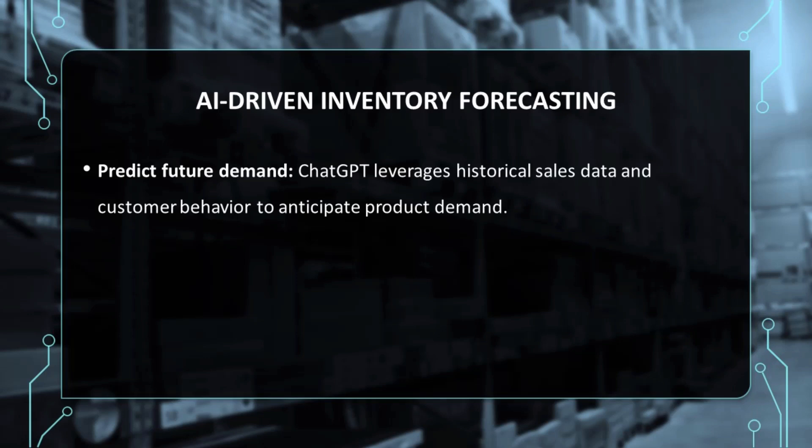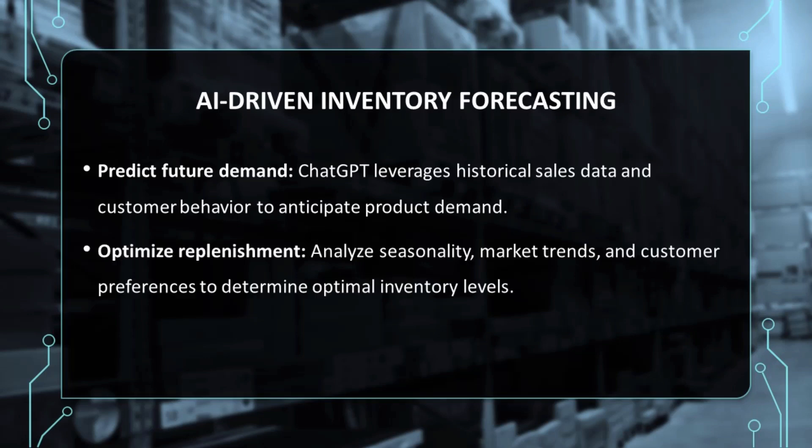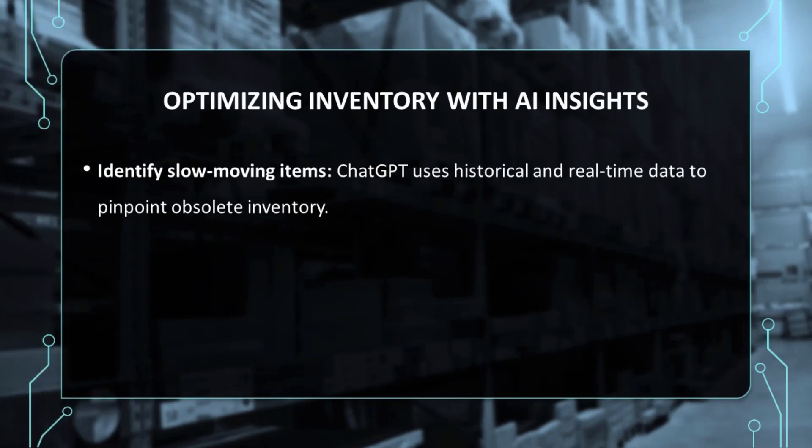and customer behavior patterns to predict future demand for specific products. By analyzing factors such as seasonality, market trends, and customer preferences, ChatGPT aids companies in forecasting when they will need to replenish their inventory and the optimal quantity required.